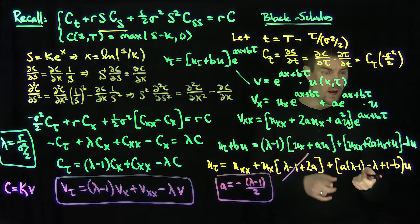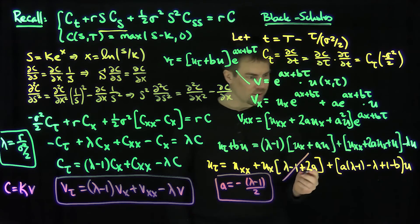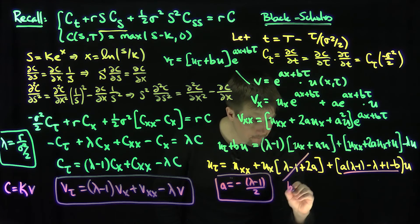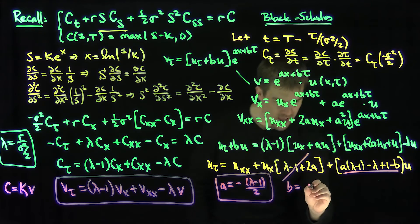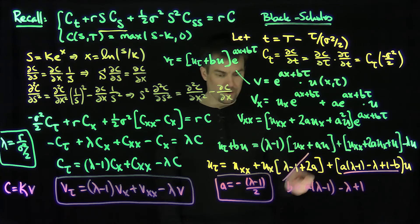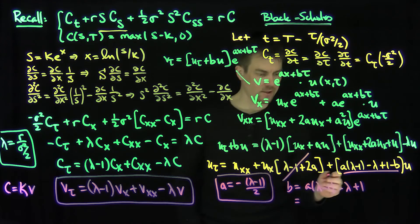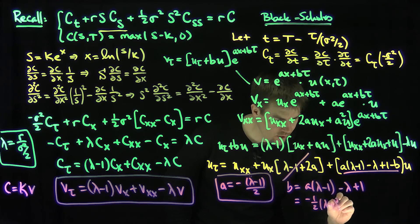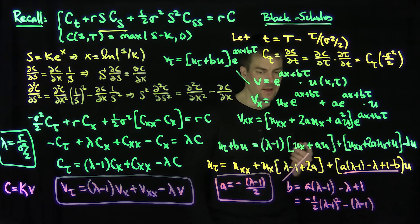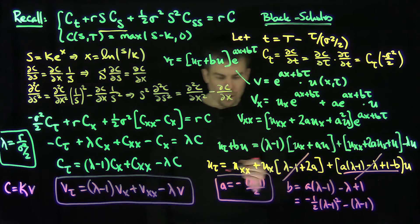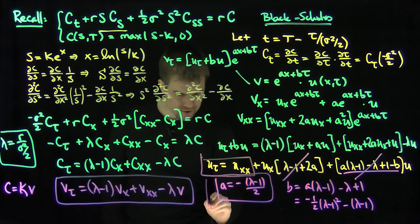So I'd like b to equal a·(lambda minus 1) minus lambda plus a squared. We can write b as negative one-half times (lambda minus 1) squared minus lambda. That's the value of b which makes the u coefficient equal to 0. By choosing those values of a and b, our equation turns into the heat equation: u_tau equals u_xx.